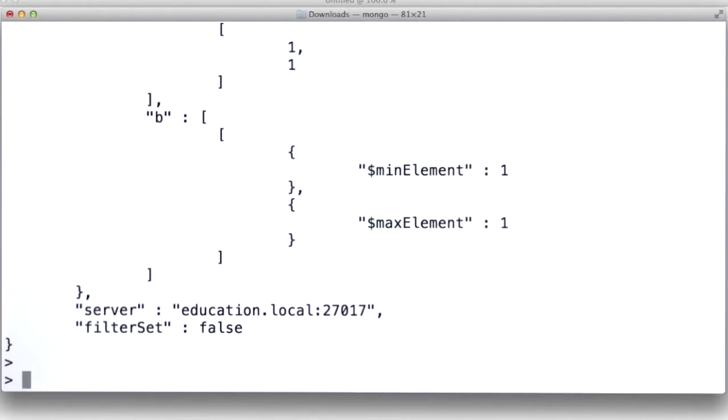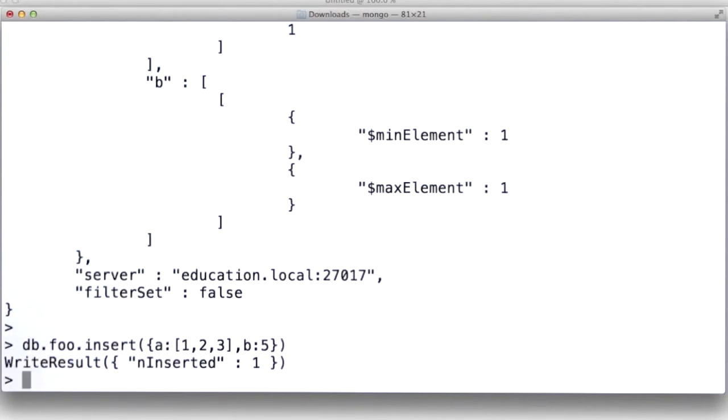Well now, let's insert another document into this collection. And this time, let's make A an array. So I'll make A an array, and I'll make B just a scalar, like 5.